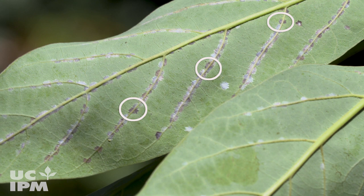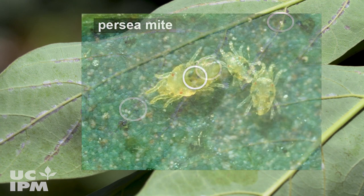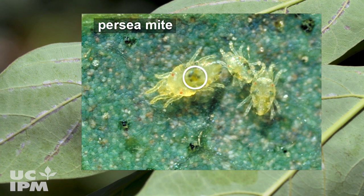Persea mite feeding causes circular yellow or brown spots to form on the underside of the leaf. Up close, the mites themselves have two or more dark blotches on their bodies.